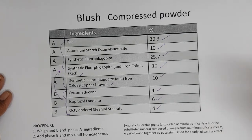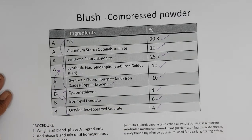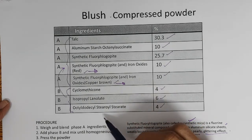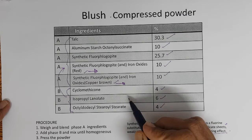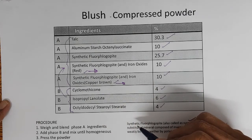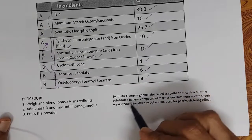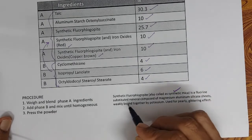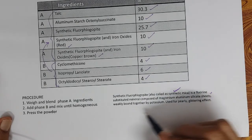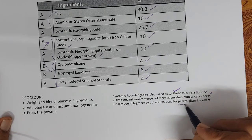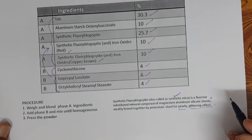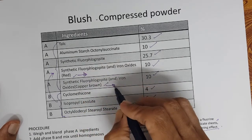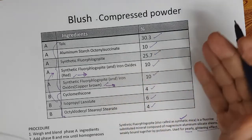All the processes of compressed powder have to be followed here as well for uniformity of color and fine particle size. Isopropyl lanolate and octadecyl stearate act as binders, and cyclomethicone improves the payoff and also the sensories. Synthetic fluorophlogophyte, also called synthetic mica, is a fluorine-substituted mineral composed of magnesium aluminium silicate sheets weakly bound together by potassium, used for a pearly glittering effect. These combinations are available under various trade names.